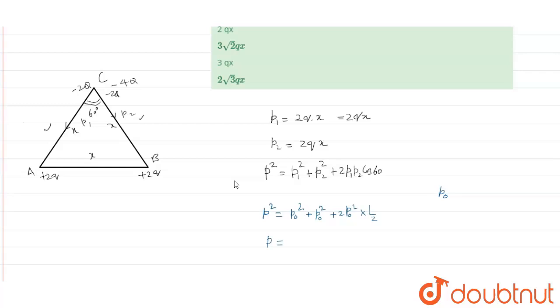Here p will come out to be under root 3p0 that means under root 3 into 2qx that will be equal to 2 root 3qx. This will be the answer and the correct option is third.